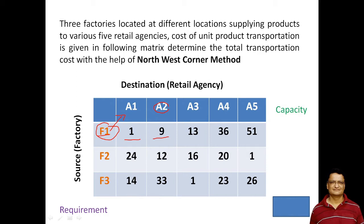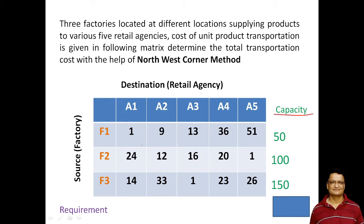The objective is to determine the total transportation cost using the Northwest Corner method. The capacity of factory F1 is 50, capacity of F2 is 100, and capacity of F3 is 150. From factory F1, you can transport any number of products not exceeding 50 to either A1, A2, A3, A4, or A5. From F2 you can transport up to 100 products, and from F3 up to 150 products.